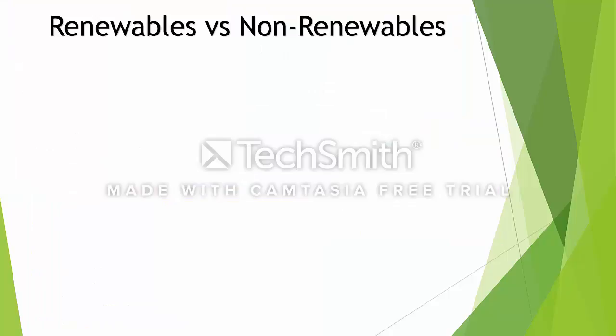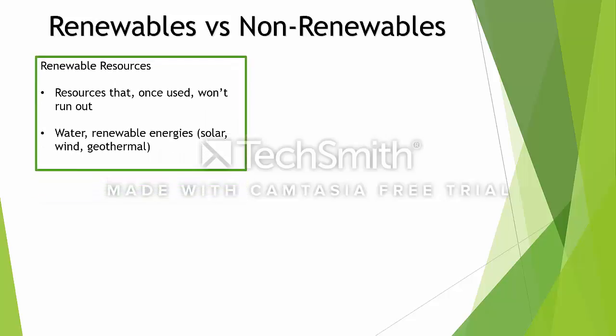Another way to classify resources in economics is as renewables and non-renewables. Renewable resources are ones that don't run out or don't deplete when used. For example, water is classed as a renewable resource because it can be reused and cleaned. Renewable energies like solar, wind, and geothermal also count as renewable resources — the sun isn't a resource that's going to run out for the planet.